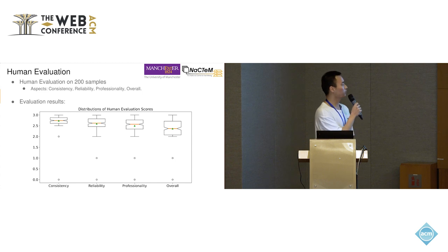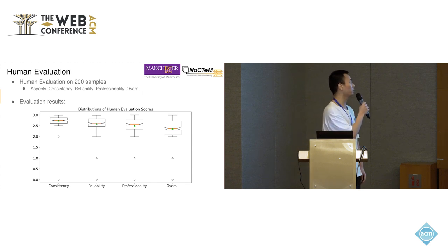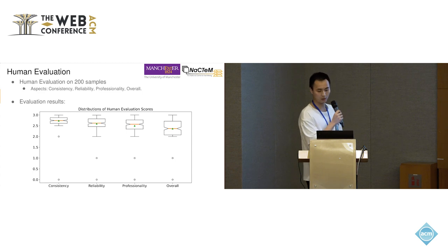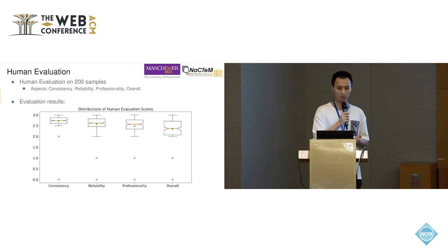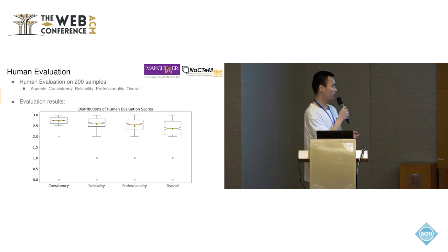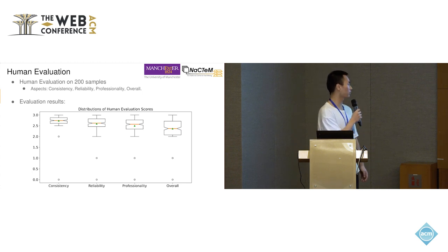Besides the holistic automatic evaluation, we also perform human evaluations on 200 random samples from the original dataset, evaluating consistency, reliability, professionality, and overall quality. The results further prove the high overall quality of the generated explanations.